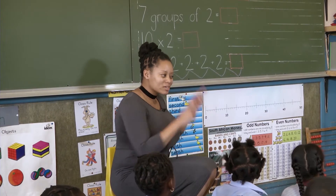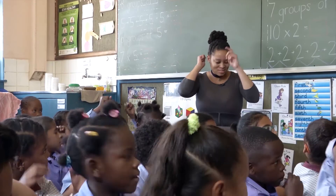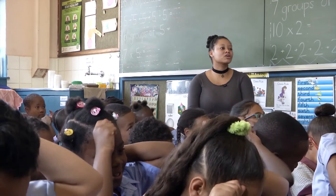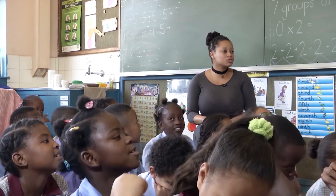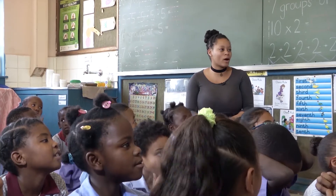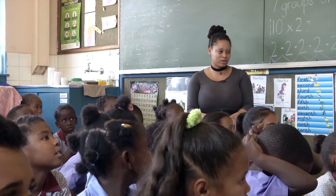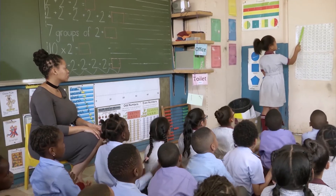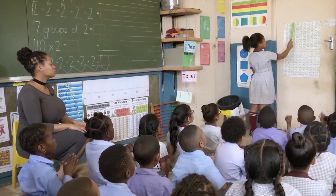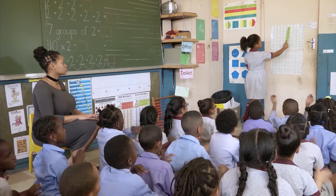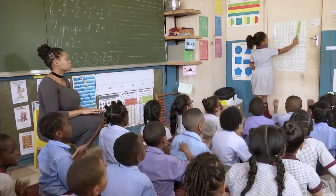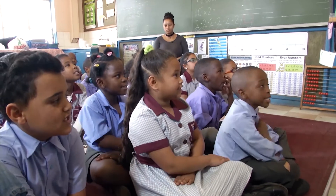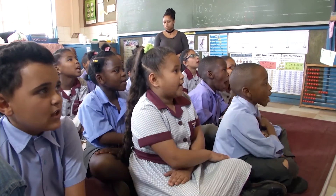We are going to put our thinking caps on, nice and tight. Kazen, you're going to help us count in twos from two to one hundred. Ready? Two, four, six, ten, twelve, fourteen, sixteen, eighteen, twenty.